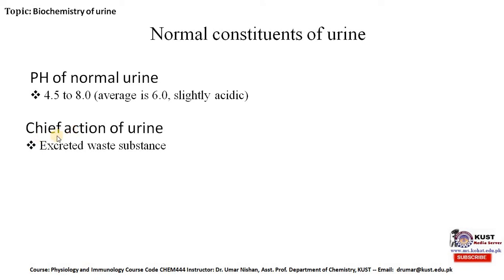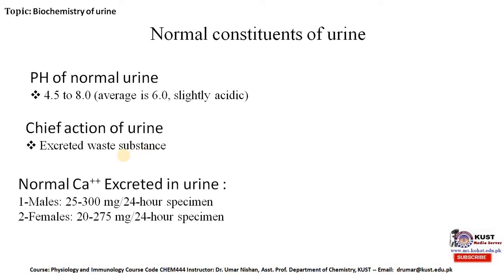The chief or major function of urine is to excrete waste substances produced as a result of the process of metabolism in the body. Normal calcium ion excreted in urine differs between sexes: in males it is from 25 to 300 mg per 24-hour specimen, while in females it is from 20 to 275 mg per 24-hour specimen.